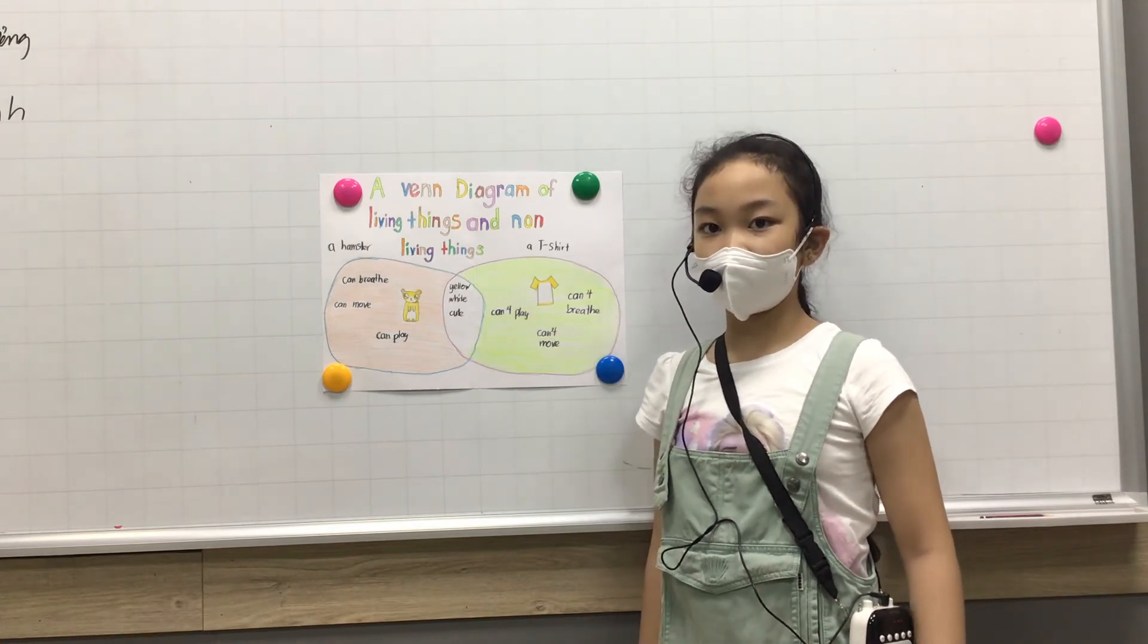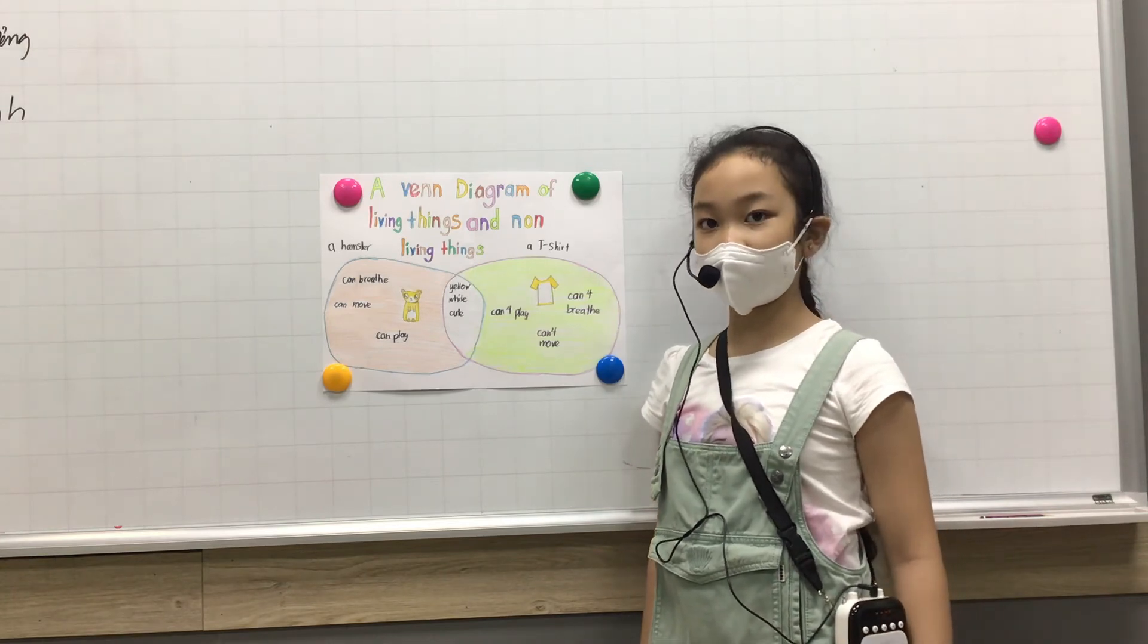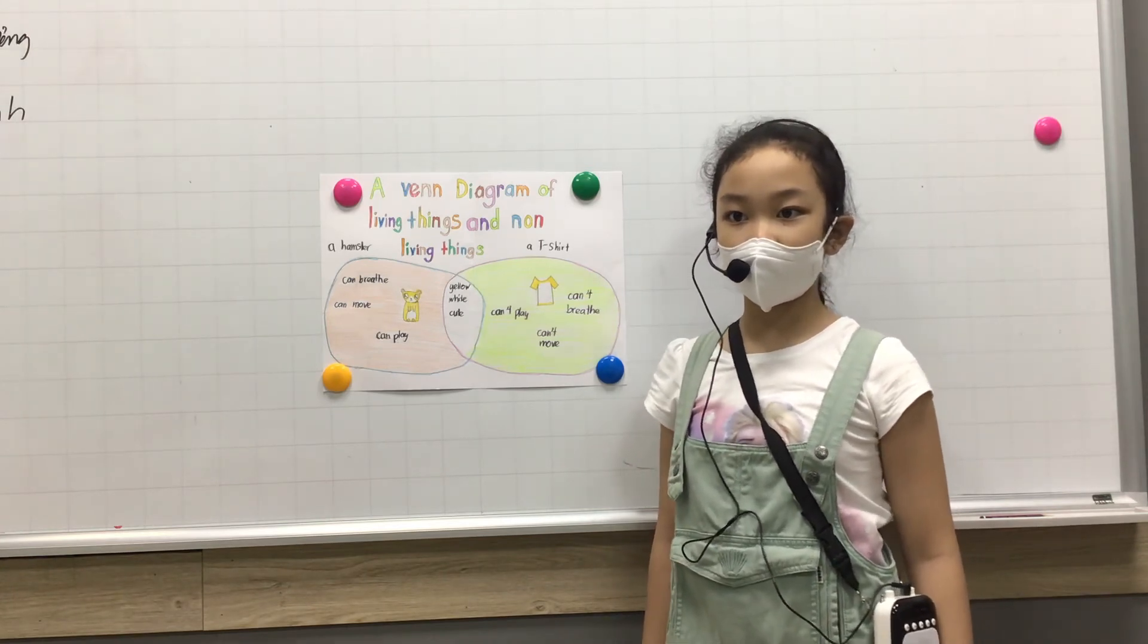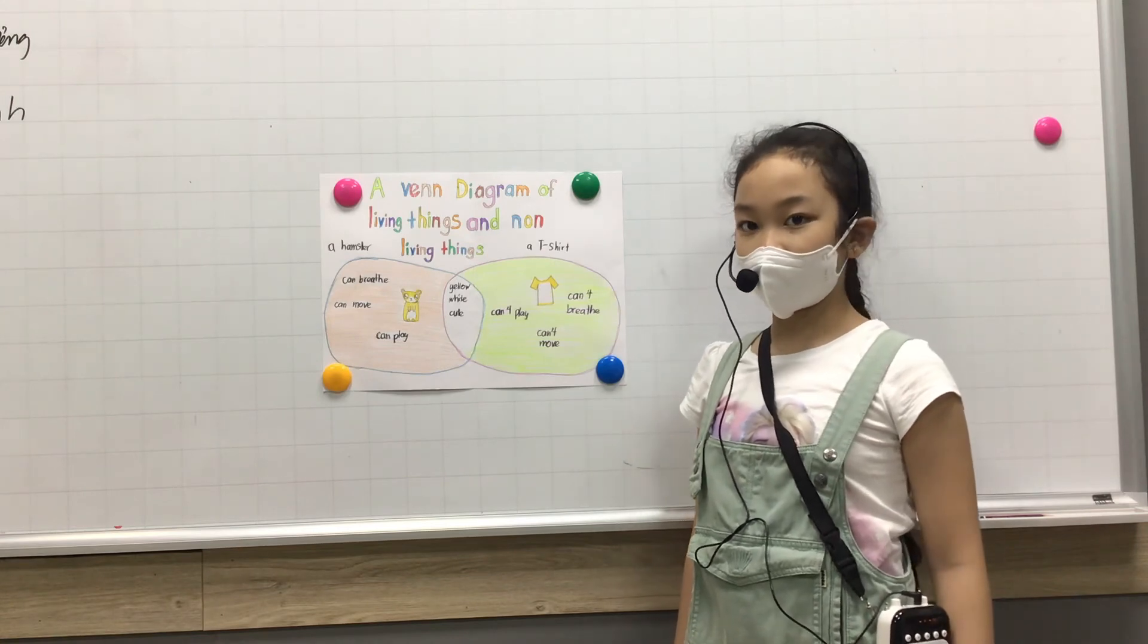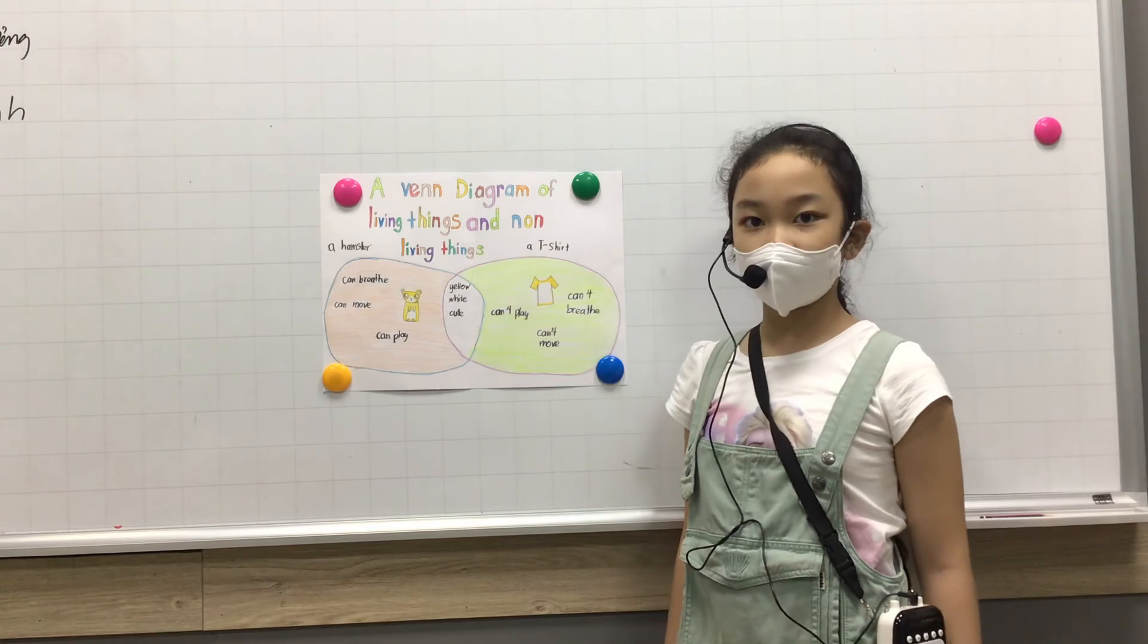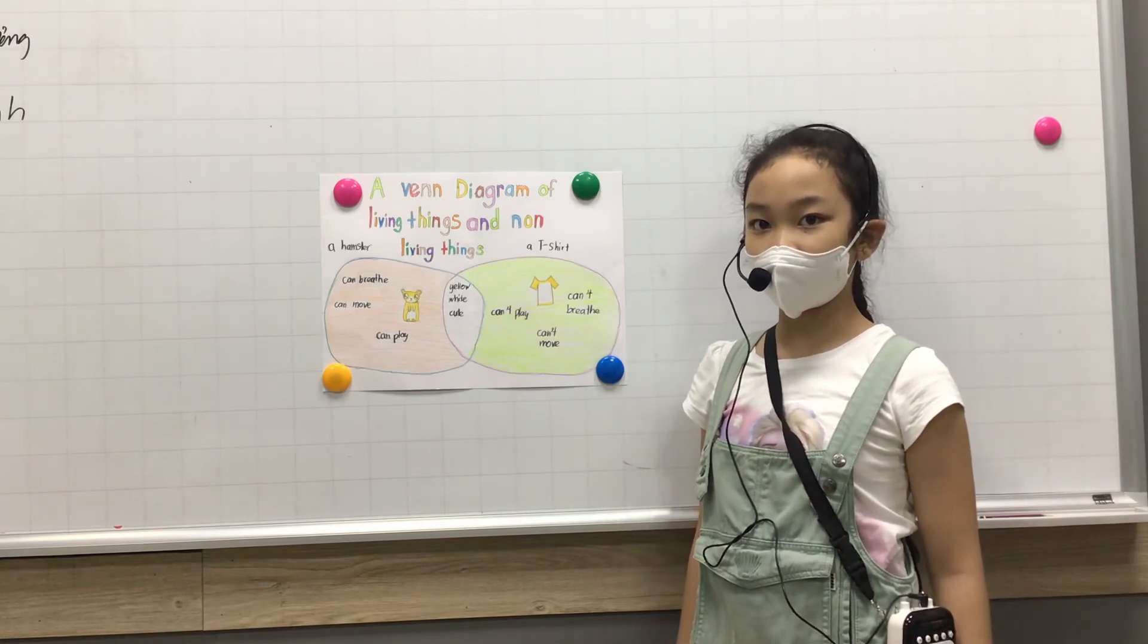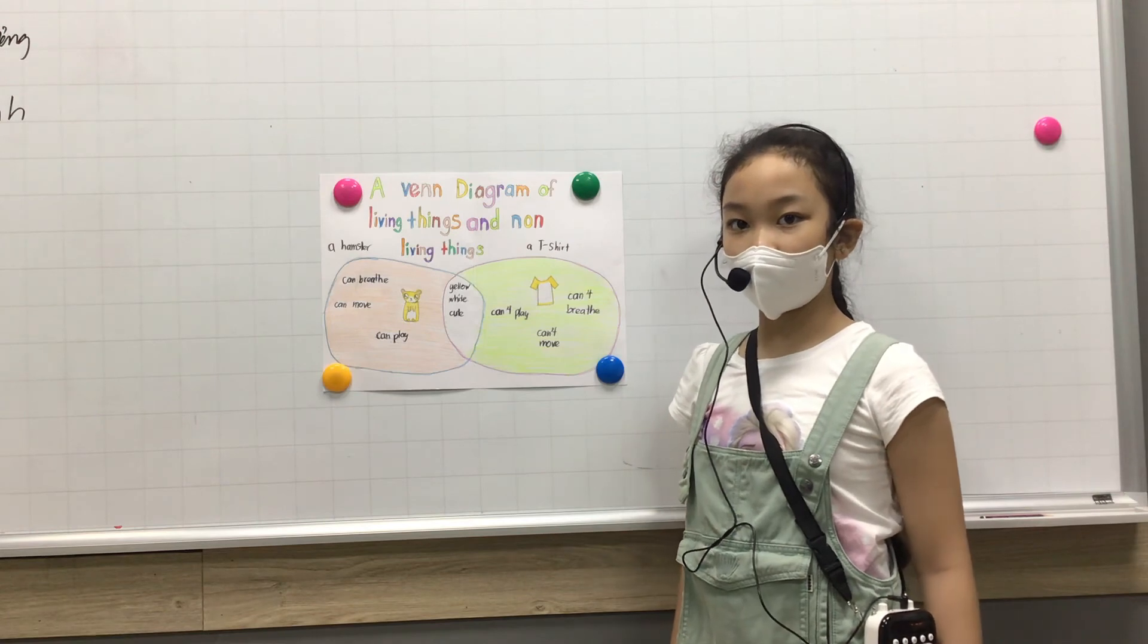I am going to tell you about the similarities between the hamster and the t-shirt. Both of them are yellow, white and cute. The hamster can play with us and the t-shirt gives people what to wear.